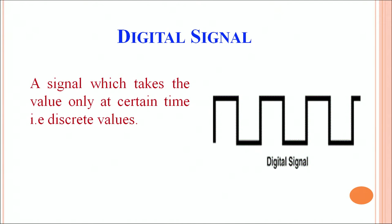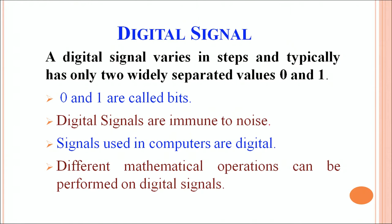A digital signal takes only discrete values at a certain instant of time, for example 0 and 1. A 0 volt corresponds to 0 bit and 5 volts corresponds to 1 bit. A digital signal varies in steps and typically has two widely separated values: 0 and 1, called bits. Digital signals are used in computers primarily because they are immune to noise.